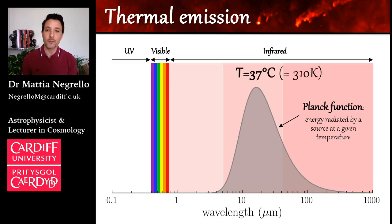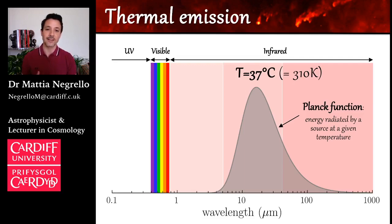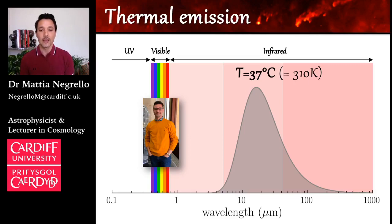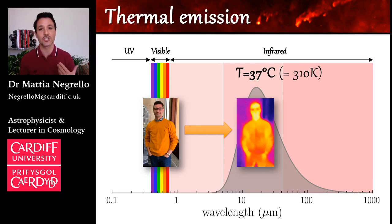In this specific case, I'm showing you the Planck function for a body at a temperature of 37 degrees Celsius, or 310 Kelvin. Why did I choose this temperature? Simply because it's the typical temperature of a human body. You can see that our thermal emission peaks in the mid-infrared part of the spectrum, well away from the visible light. If I take a picture of myself in visible light with an iPhone, you can see me because I'm reflecting light, but I'm not shining bright through my thermal emission because we can't see it in the visible. But if I take the same picture with an infrared camera, now you can see that I am indeed shining bright, because the infrared camera picks up this thermal emission.